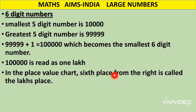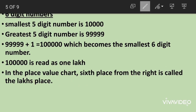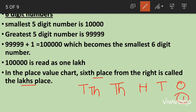In the place value chart, the sixth place from the right is called the lakhs place. Lakhs is the new place value we are learning today. The place values are: ones, tens, hundreds, thousands, ten thousands — and now the sixth place is for lakhs. Lakhs is represented by the letter L.